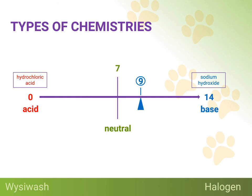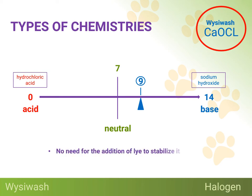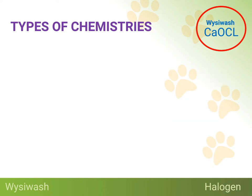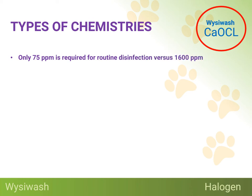The next chlorine compound in our list of halogens is calcium hypochlorite, or WYSIWASH. Because of the substitution of calcium in place of sodium in this compound, there is no need for the addition of lye to stabilize it. As a result, calcium hypochlorite has a pH of 8.5, which is slightly below the 9.0 pH tipping point that determines which form of chlorine ends up being most dominant. In this case, it would be the hypochlorous acid form of chlorine, which is 120 times more powerful than the hypochlorite ion form that dominates in bleach. Consider some of the following bullet points.